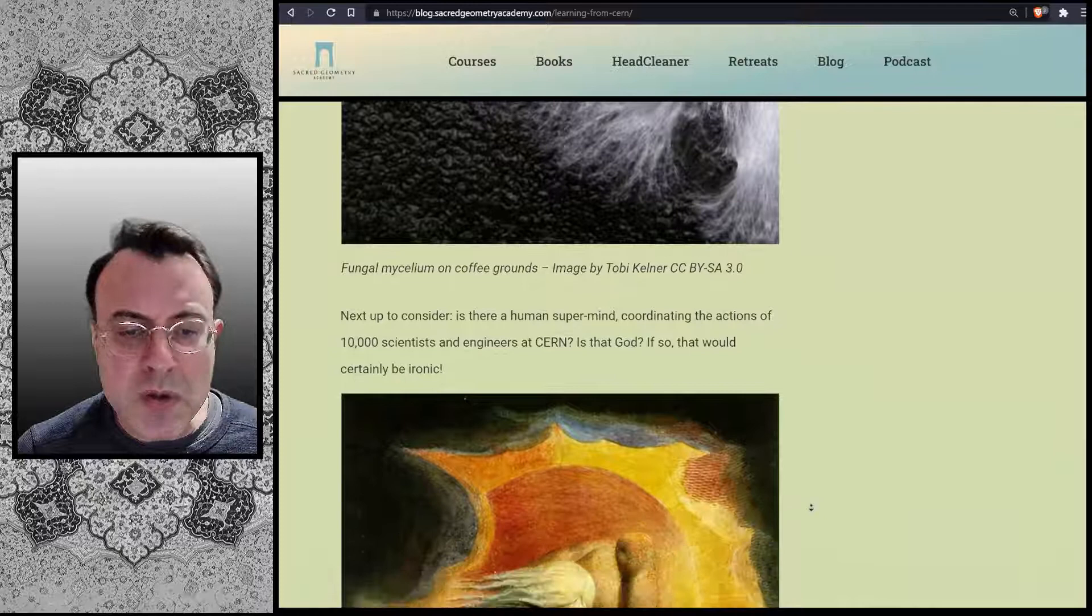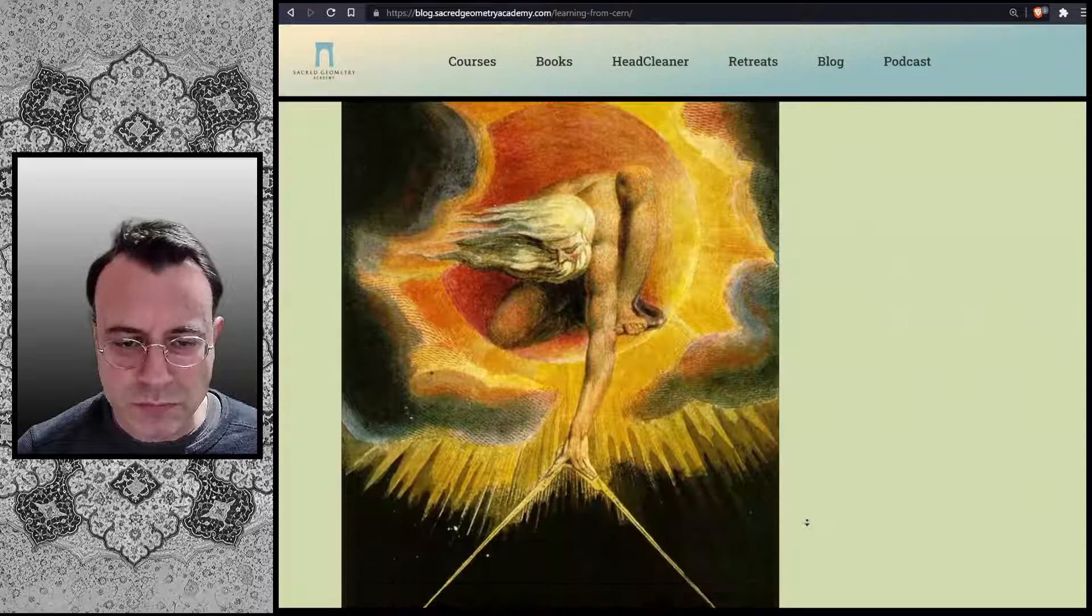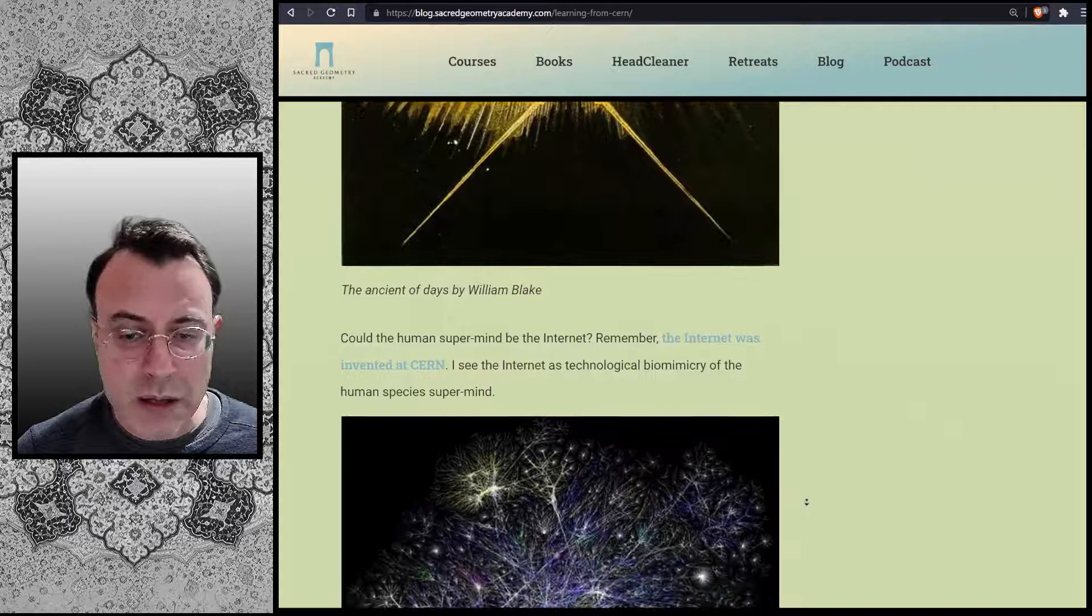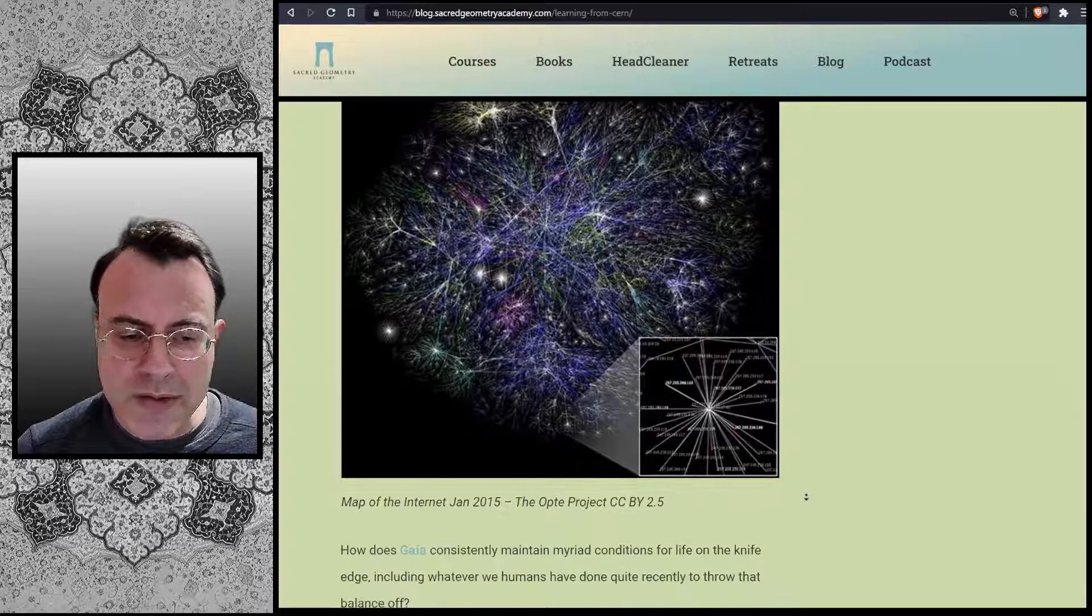Next up, consider: Is there a human supermind coordinating the actions of 10,000 scientists and engineers at CERN? Is that God? If so, that would certainly be ironic. Could the human supermind be the internet? Remember, the internet was invented at CERN. I see the internet as a technological biomimicry of the human species' supermind.